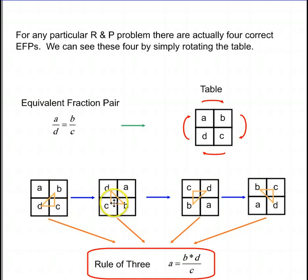We see over here, b times d divided by c again, b times d divided by c again, and b times d divided by c again.